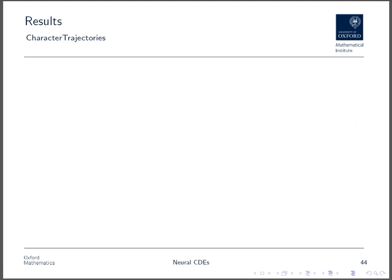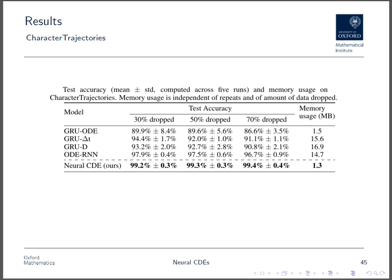So, first of all, we have the character trajectories dataset. This consists of people writing the letters A, B, C, and so on, and recording the moment-by-moment movement of the pen across the page. The task is to figure out which letter they've drawn. Here, we drop varying amounts of the data to see how things change. We observe that the neural CDE model outperforms every other model considered, which are a variety of ODE and RNN-based models, which is the family of models to which the neural CDE belongs. Furthermore, we see that it does so whilst using an order of magnitude less memory than the best of the competing models, which is because of the adjoint backpropagation.